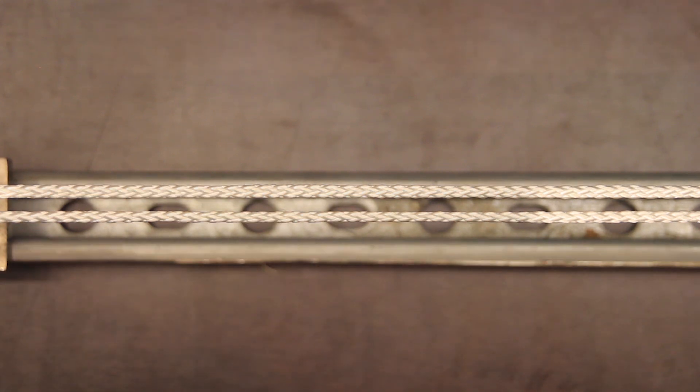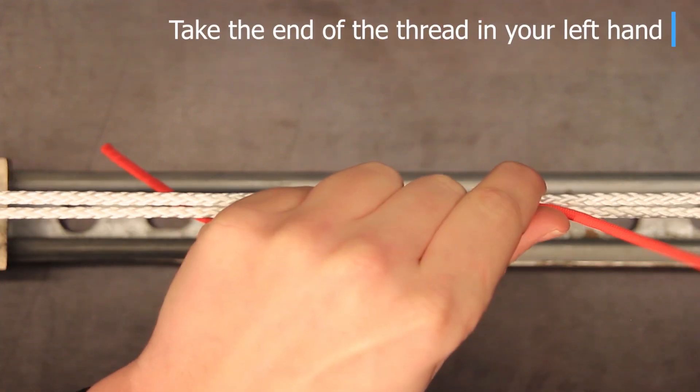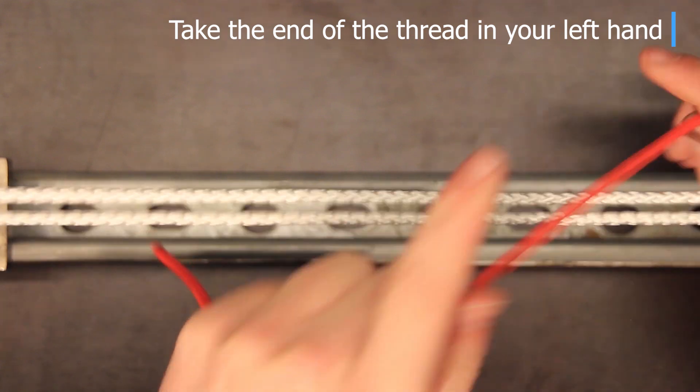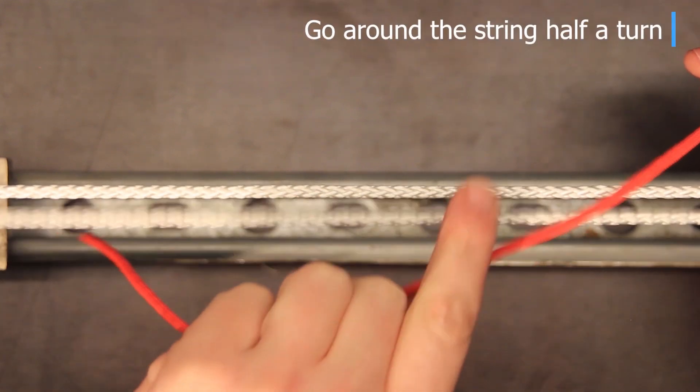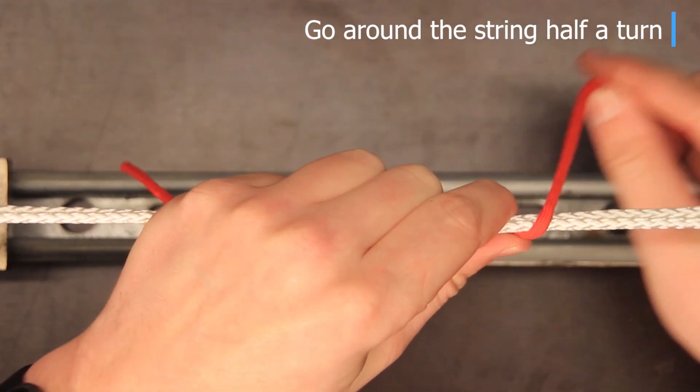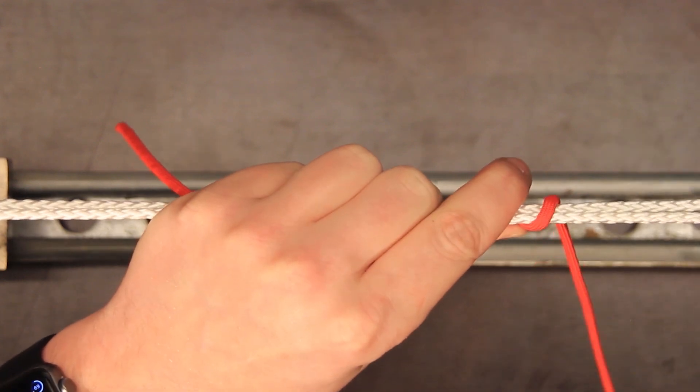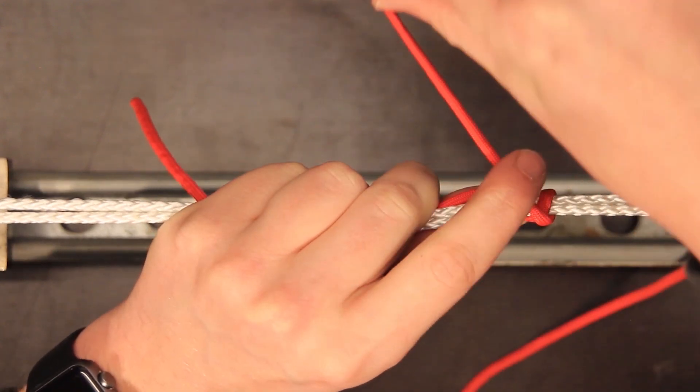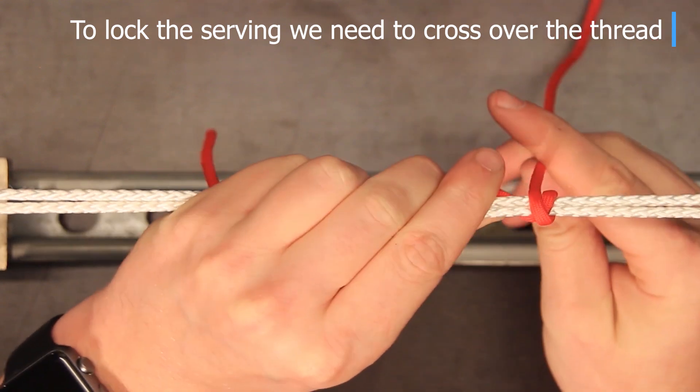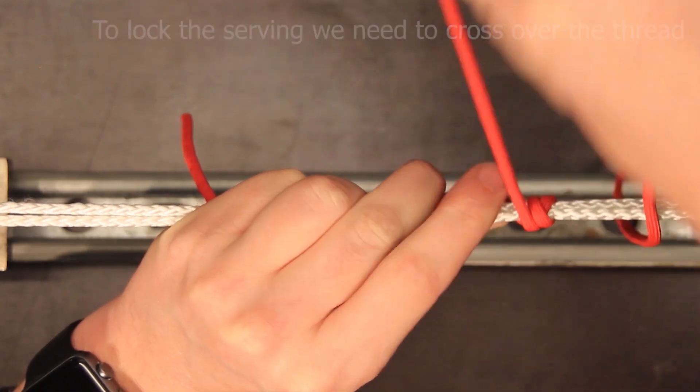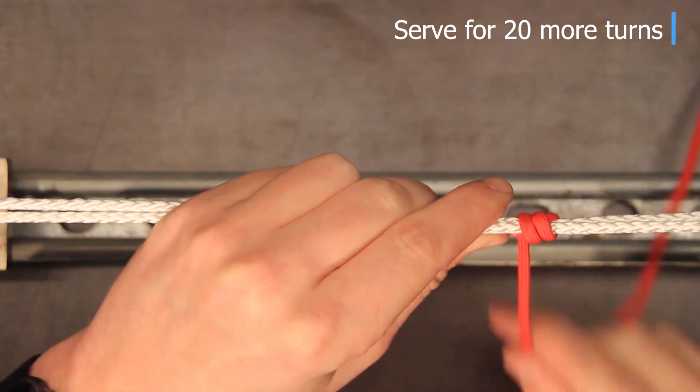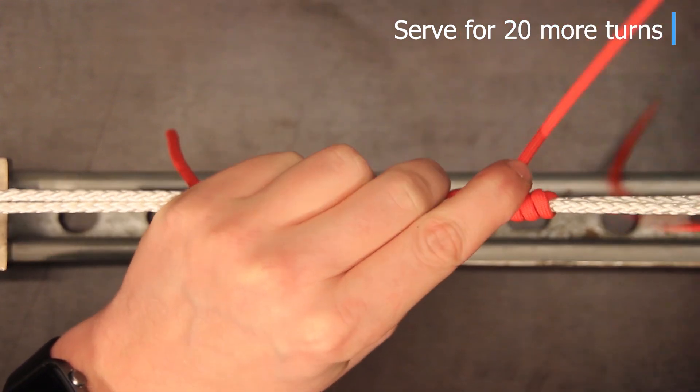We're going to use paracord so you can see more in detail and the first step you want to do is take a piece of rope in your left hand, go around the string for half a turn and then try to go cross over the serving and go and serve a couple of turns.